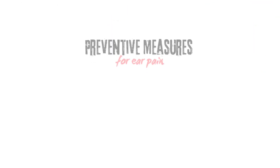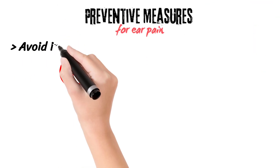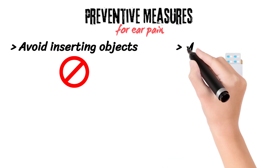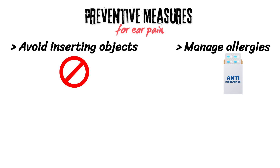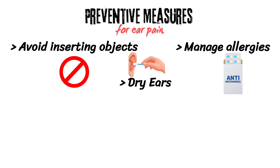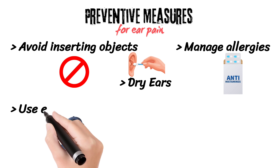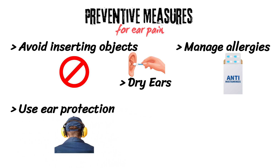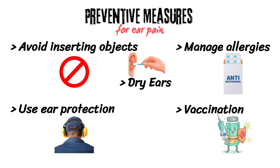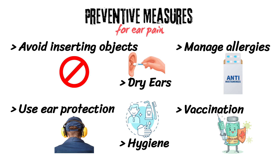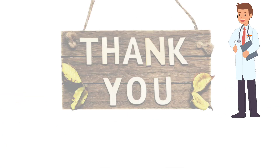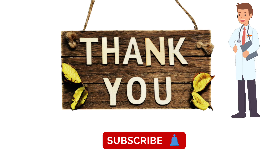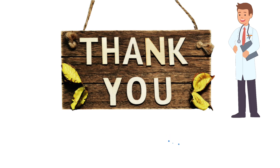Preventive measures for ear pain include: avoid inserting objects into the ear; manage allergies or respiratory infections to prevent Eustachian tube dysfunction; dry the ears thoroughly after swimming or bathing; use ear protection in noisy environments; vaccinations like pneumococcal and influenza vaccines to reduce the risk of ear infections; and maintain good hygiene. Thanks for watching — don't forget to subscribe and hit the bell icon for more content. Stay healthy and take care.